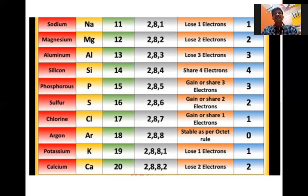Phosphorus — 3. Sulfur — 2. Chlorine — gains the electron, so 1. Argon — neither loses nor gains, so valence is 0. Potassium — loses 1 electron. Calcium — loses 2 electrons, so valence is 2.